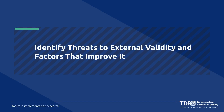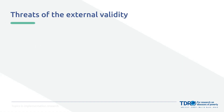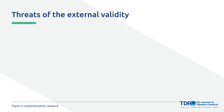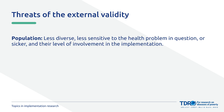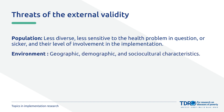Now let's look at what factors would threaten external validity and what needs to be in place to improve it. There are four main areas that can threaten our ability to generalize a study to a different context. First, population: the people involved in the study may be less diverse, less sensitive to the health problem, or sicker, and how much they're involved in the intervention process can vary. Second, setting or environment: if the setting is very homogenous or has unique features that make it different, or if the study site wasn't chosen randomly but for specific reasons, this can affect how well findings transfer.